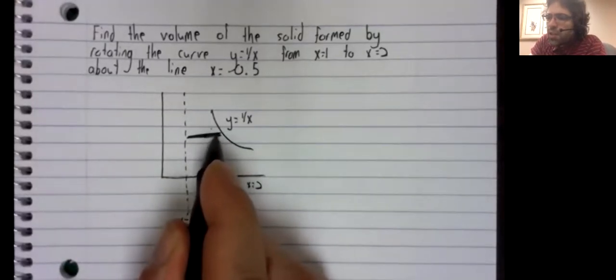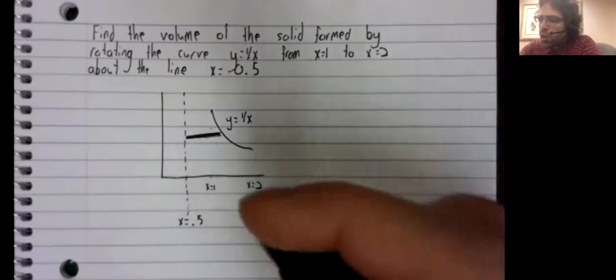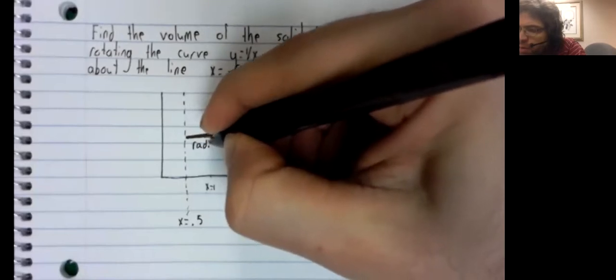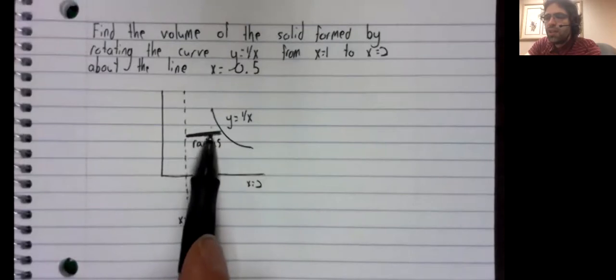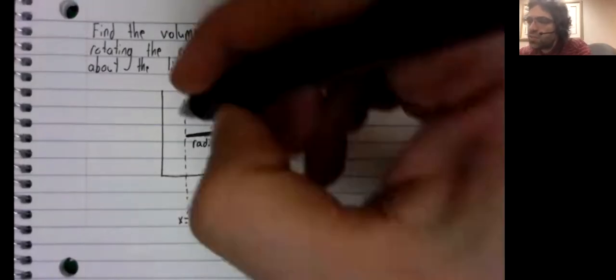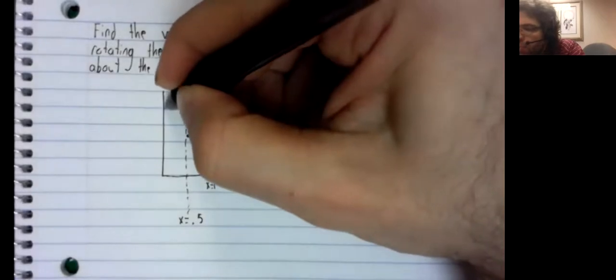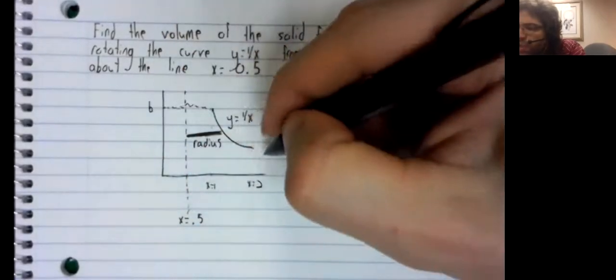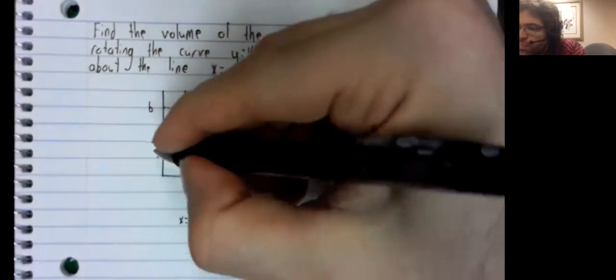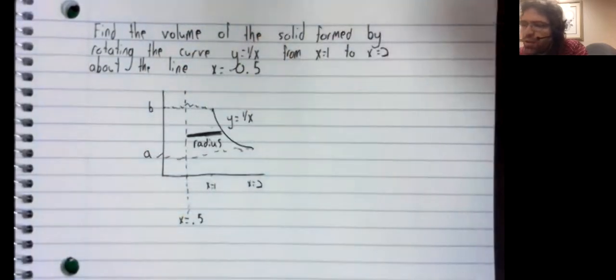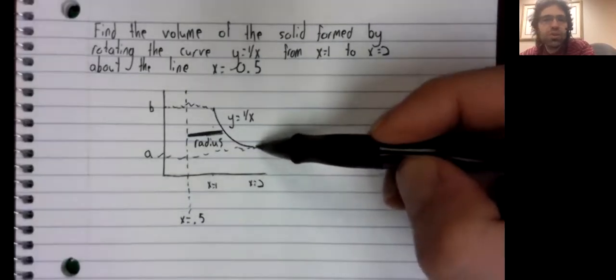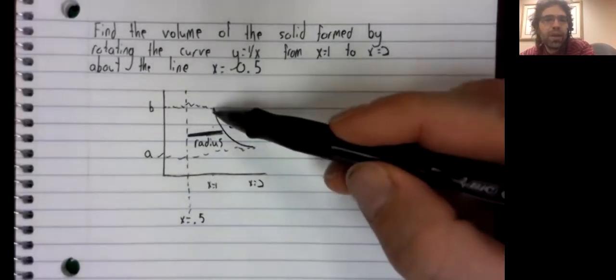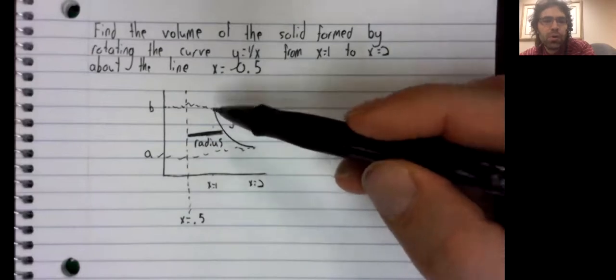What do we need to complete this problem? We are using horizontal rectangles now, we need this radius. And our limits of integration have to be in terms of y. So we need this lower bound and this upper bound.